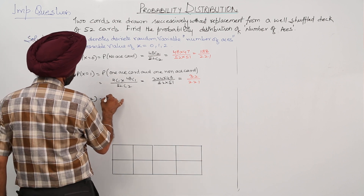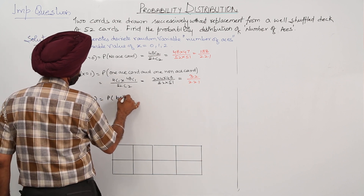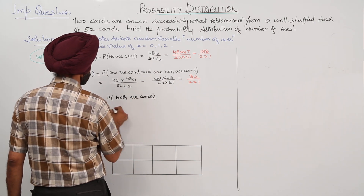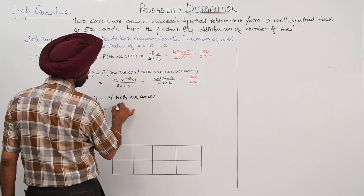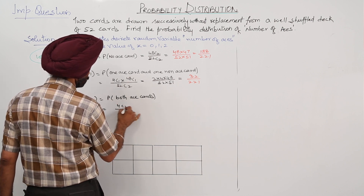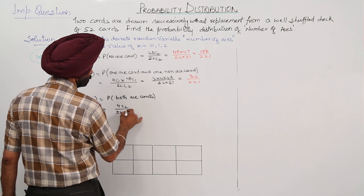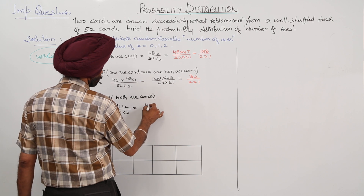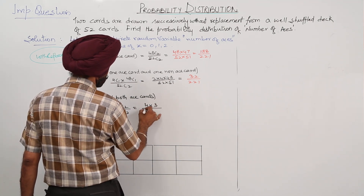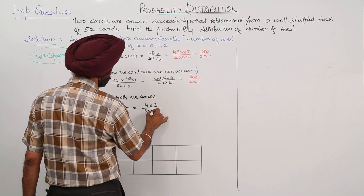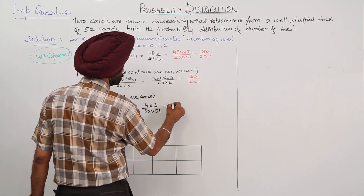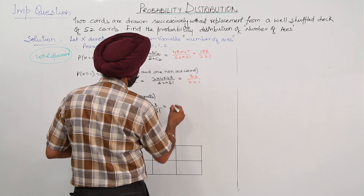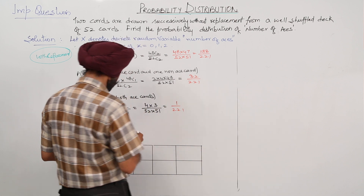Number 3: X = 2, probability for both ace cards. This equals 4C2 / 52C2 = (4 × 3) / (52 × 51) = 1/221.